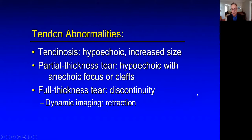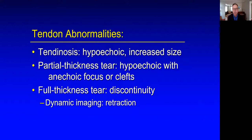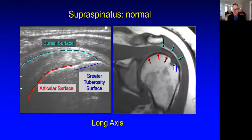When looking at a tendon abnormality anywhere in the body, I put them into one of these categories: tendinosis, partial tear, and full thickness tear. Tendinosis will appear hypoechoic with thickening of the tendon. Partial thickness tears will be incomplete disruption of the tendon, usually anechoic or hypoechoic. Full thickness tears will be complete discontinuity, often characterized with tendon retraction.